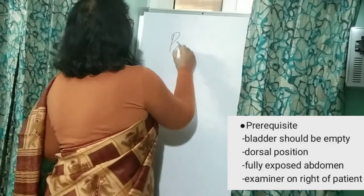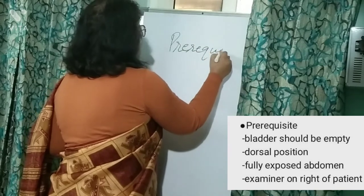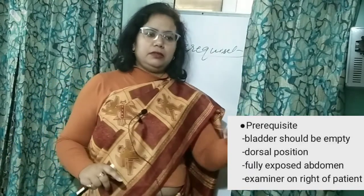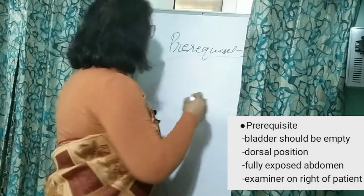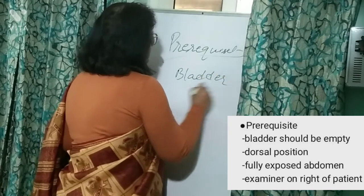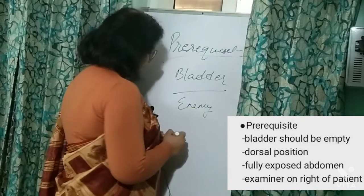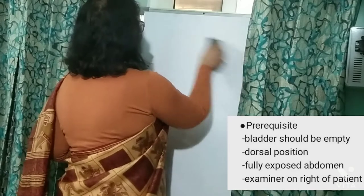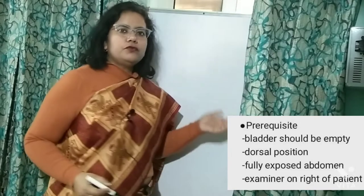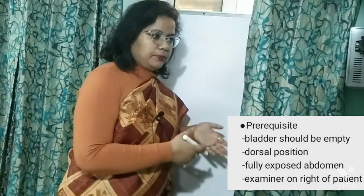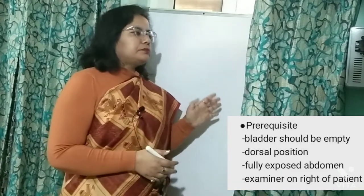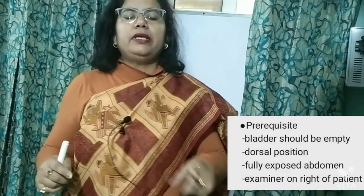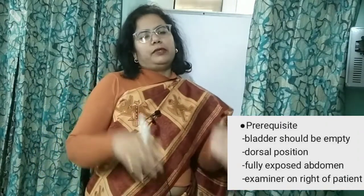Number one prerequisite: the bladder. You should ask the woman to empty her bladder before examination — this is a must. The bladder is considered the enemy of the obstetrician. Many times what you find as an oblique lie with a full bladder turns to be a longitudinal lie when she empties her bladder. You may also confuse a pelvic tumour with pregnancy when the bladder is full. So always ask the woman to empty her bladder before any abdominal examination.